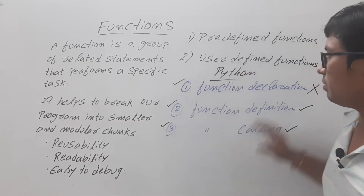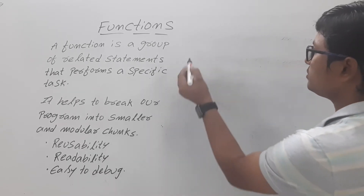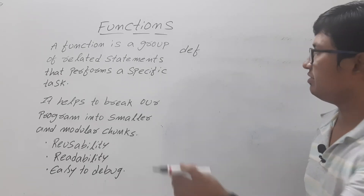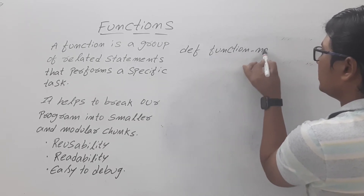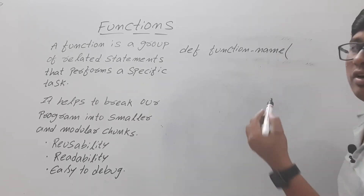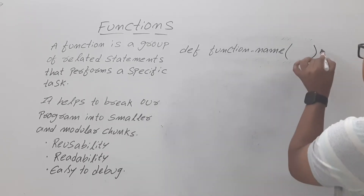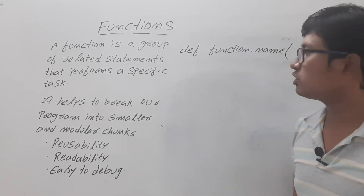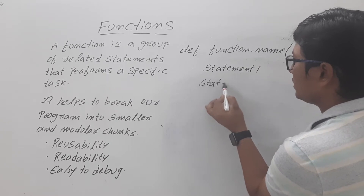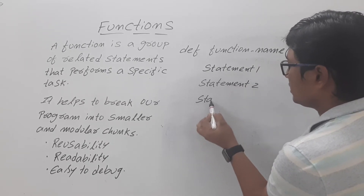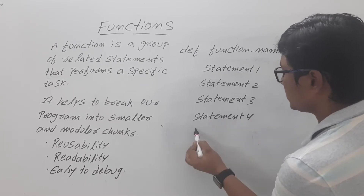Now let me discuss the function definition syntax. The generalized syntax is: def function_name(list of parameters or arguments), then end with a colon. The parameters are optional. After the colon, indentation starts, and you write your statements — statement one, statement two, statement three, statement four — and optionally a return statement.